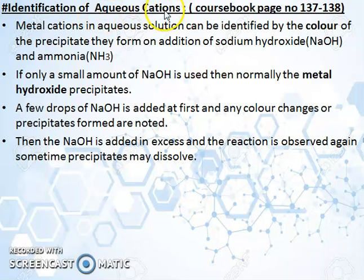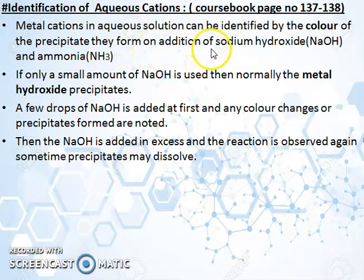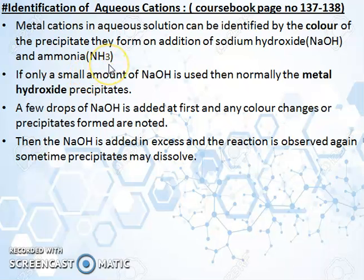Identification of aqueous cations. In any solution, whether cations or anions are present, we understand that by its change in color. For metal cations in aqueous solution, they can be identified by the color of the precipitate they form when sodium hydroxide (NaOH) and ammonia (NH3) are added. When the solution changes color upon addition of sodium hydroxide and ammonia, we can understand the presence of cations.